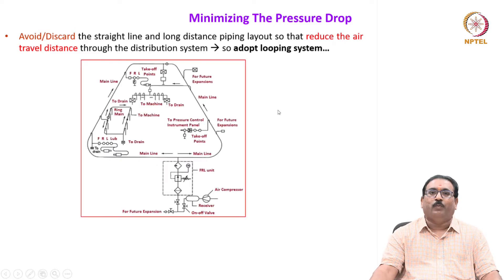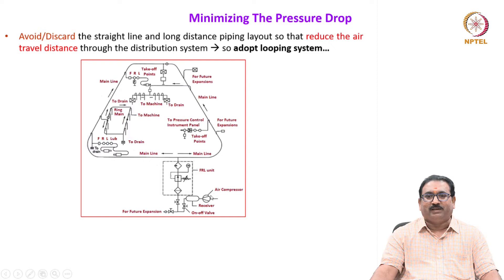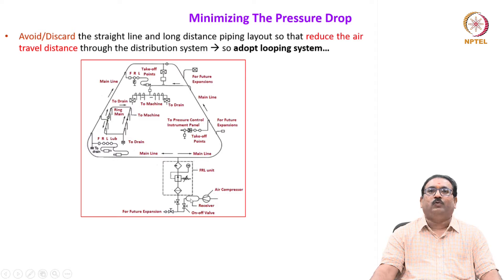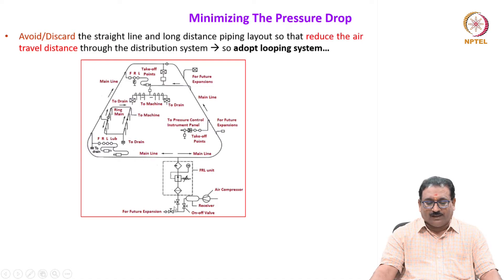You already know what the looping system is. The compressor here — the air compressor — stores air in the receiver, which stores the required quantity of air at the required pressure. Then it supplies to the various machine tools and devices which use the air. As many on-off valves as needed will be incorporated.